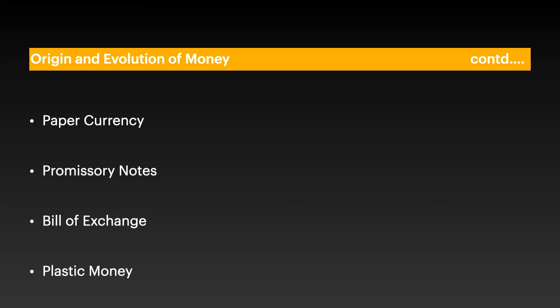Paper currency was first introduced in the Song dynasty in China during the 11th century, and Europe started using paper money from the 13th century. In medieval Italy, due to insecurity and difficulty of transporting large sums of money over long distances, traders started using promissory notes. Initially personally registered, these notes soon became a written order to pay the amount to whoever held them — predecessors of regular bank notes. Bills of exchange emerged with expanding European trade toward the end of the Middle Ages.